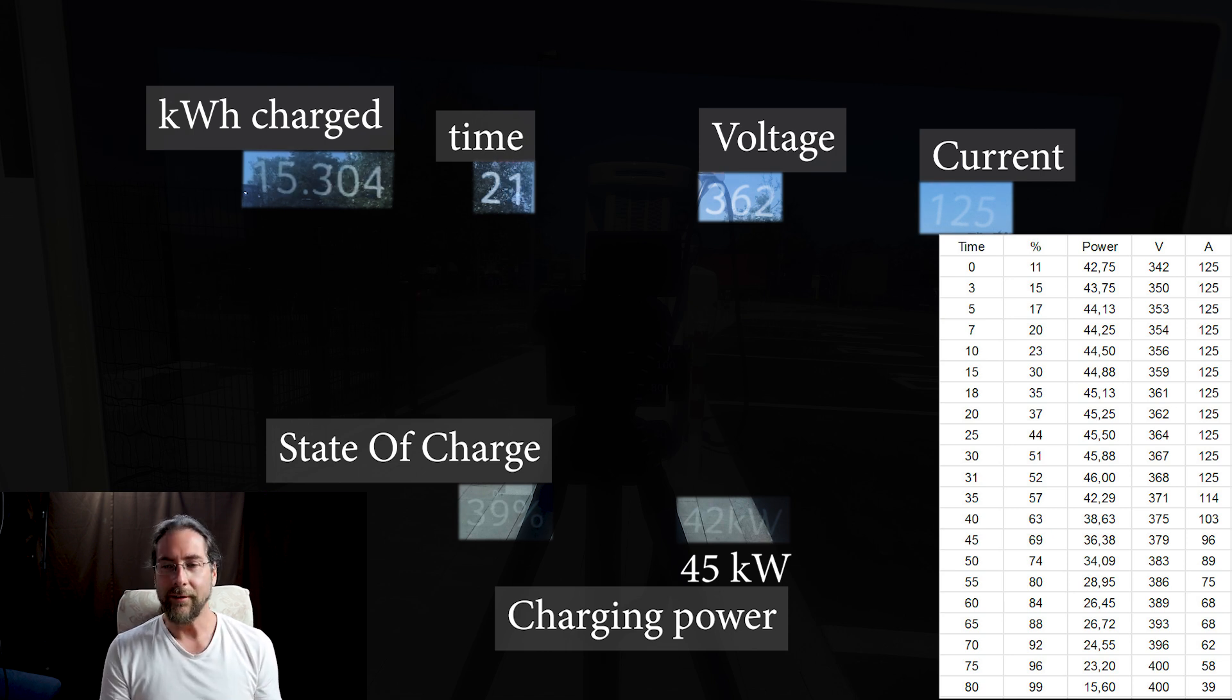Voltage going up, amps stay the same, percentage goes up. In a minute or so we have 46 kilowatt and that's pretty neat for a car this size. 18 kilowatt hours charged in 25 minutes to 45 percent.